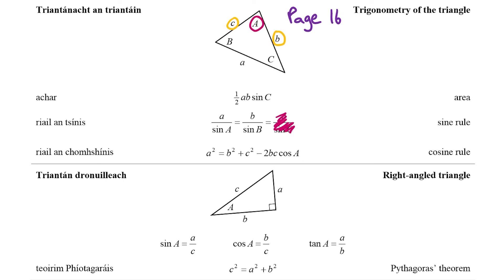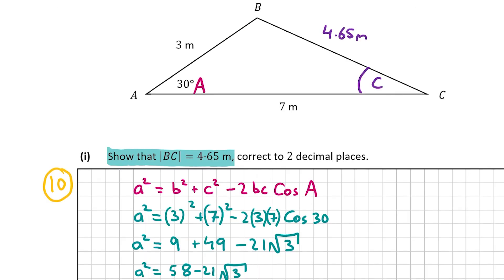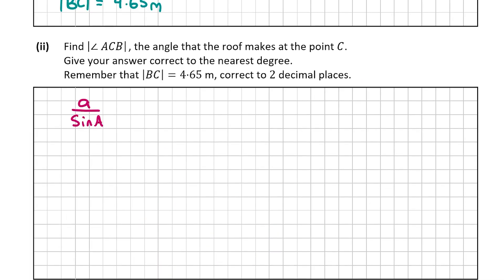Using the sine rule, we have two sides a and b and an angle A, leaving one unknown — angle B (which is our angle C). Capital A remains 30 degrees. Small a must be opposite capital A, so small a = 4.65 meters. The angle we're finding is capital C, which I'll label as capital B in the formula, and then small b (opposite that angle) is 3 meters. The formula is a/sin A = b/sin B, giving 4.65/sin30° = 3/sin C.